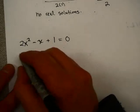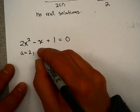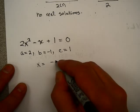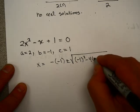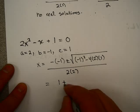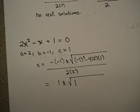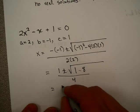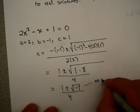Let's try another one — try this on your own, then come back. A equals 2, b equals negative 1, c equals 1. So x equals 1 plus or minus the square root of 1 minus 4 times 2 times 1, over 4. That gives 1 plus or minus the square root of 1 minus 8, over 4, which is the square root of negative 7. Again, we cannot take the square root of a negative number, so there are no real solutions.